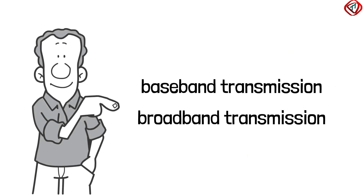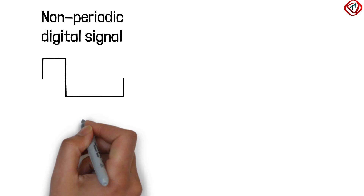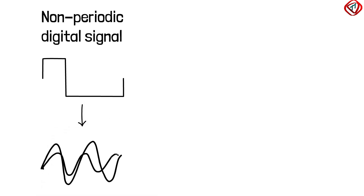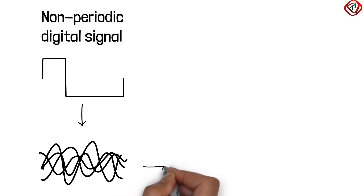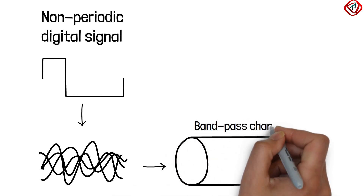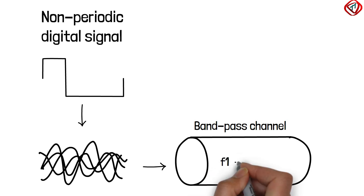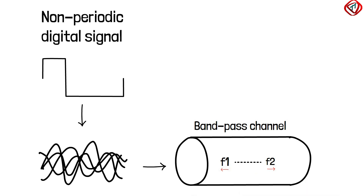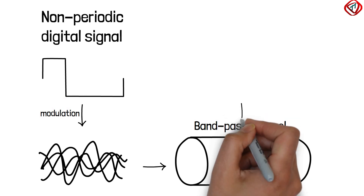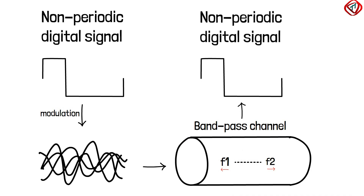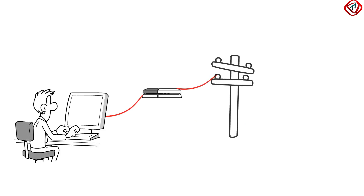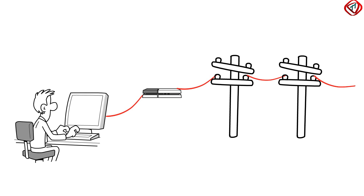Now comes broadband transmission. In broadband transmission, the digital signals are converted to composite analog signals and transmitted to the receiver via a band-pass channel, allowing frequencies ranging from f1 to f2 to pass through it. The frequencies below f1 and above f2 are discarded. Converting a digital signal to a composite analog signal is called modulation. At the receiver, the composite analog signal is converted back to a digital signal, which is called demodulation. Computer data sent by telephone subscriber line using modems is an example of broadband transmission.